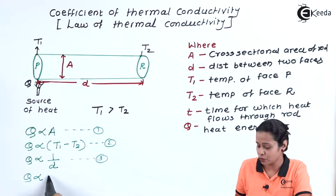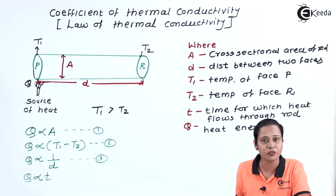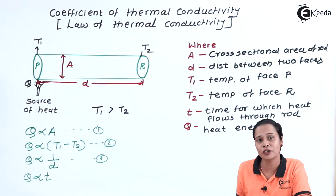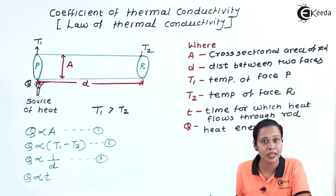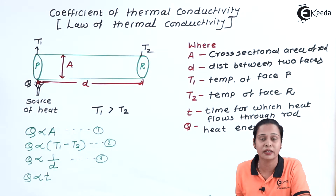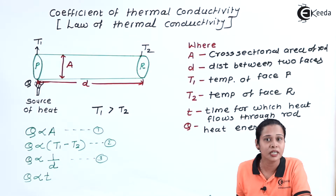Q is directly proportional to t, where small t is the time for which heat is flowing through the material. Suppose heat is flowing for 5 minutes in one case and 10 minutes in another — in the second case, the material will have transferred more heat. So heat transfer is directly proportional to time.